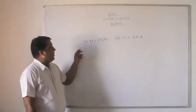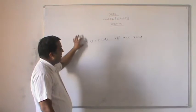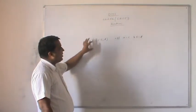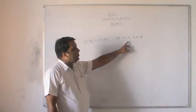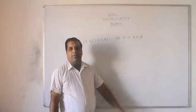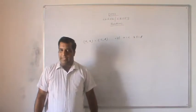Both ordered pairs are equal only if and only if A equals C and B equals D. That ordered pair is equal only if A equal to C and B equal to D.